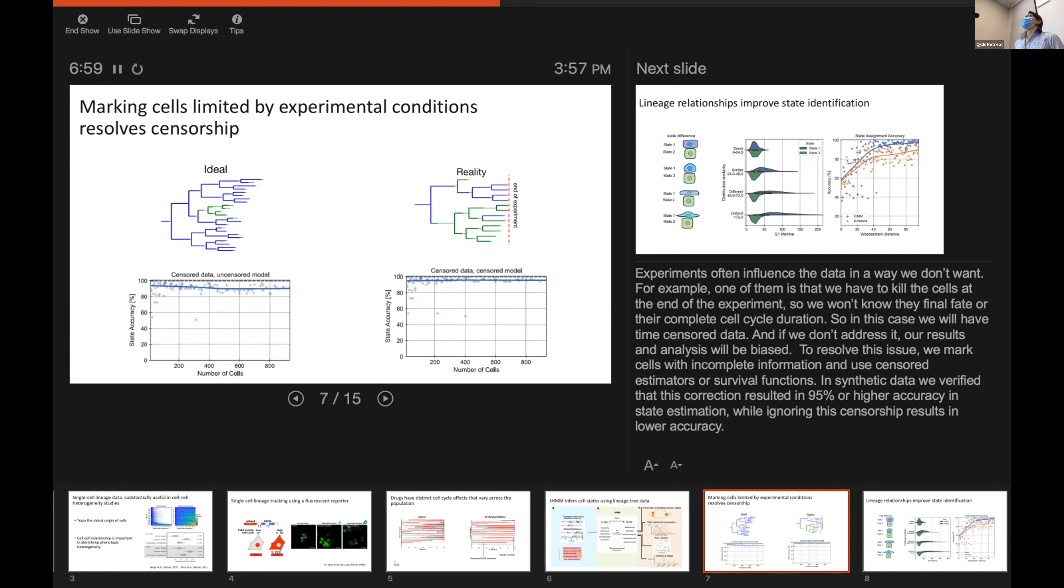So, we wouldn't know if these cells would have died or how long they would have lived. If we don't handle this missing information correctly, we could have biased estimations or less state assignment accuracy. But what we did was we used survival functions and censored estimators, and we could have a relatively higher accuracy for state assignment.